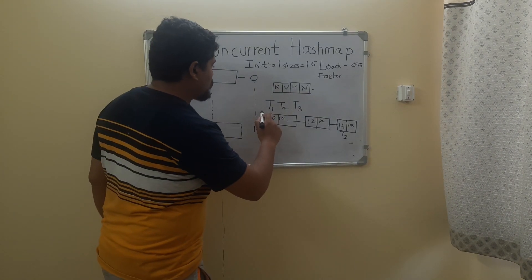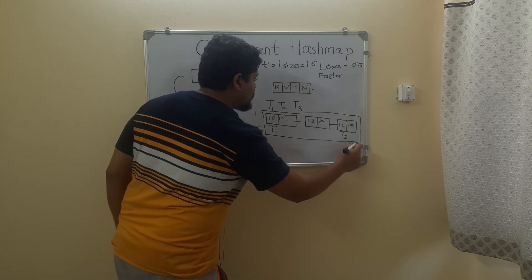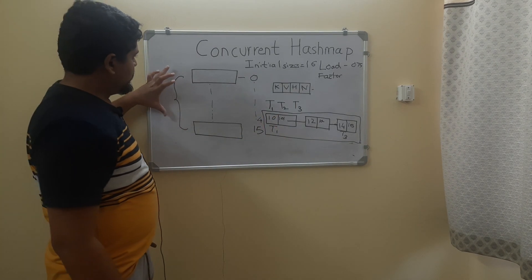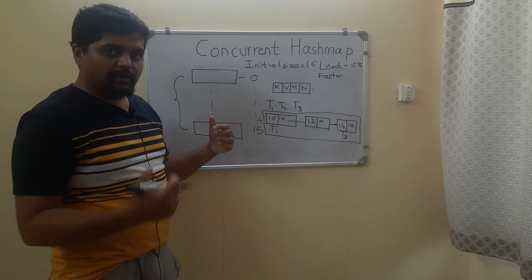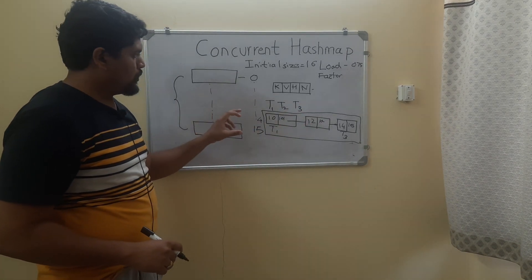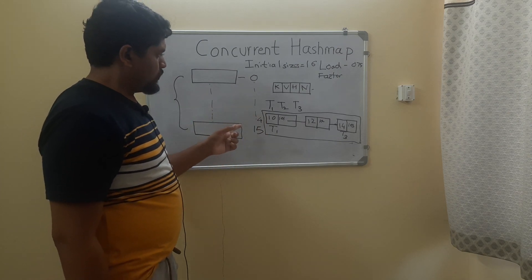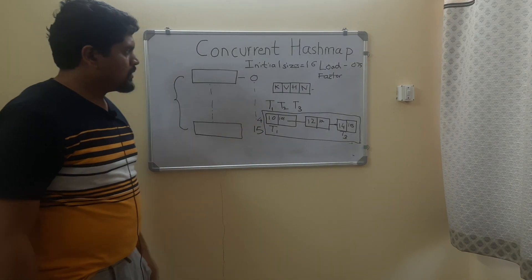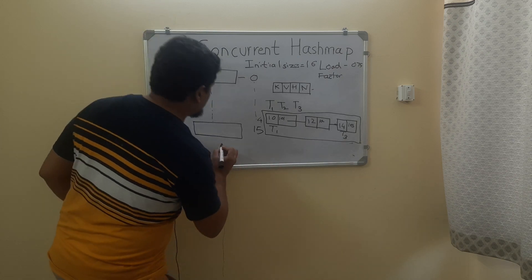ConcurrentHashMap will lock the entire fourth node itself. It will not lock the entire HashMap or all 16 buckets at a time — it will lock only the specific node where concurrent operations like multiple updates or deletes need to be performed. It obtains a lock on that specific node in the bucket list, and with the help of that lock it can concurrently update or delete nodes. This resolves the ConcurrentModificationException.